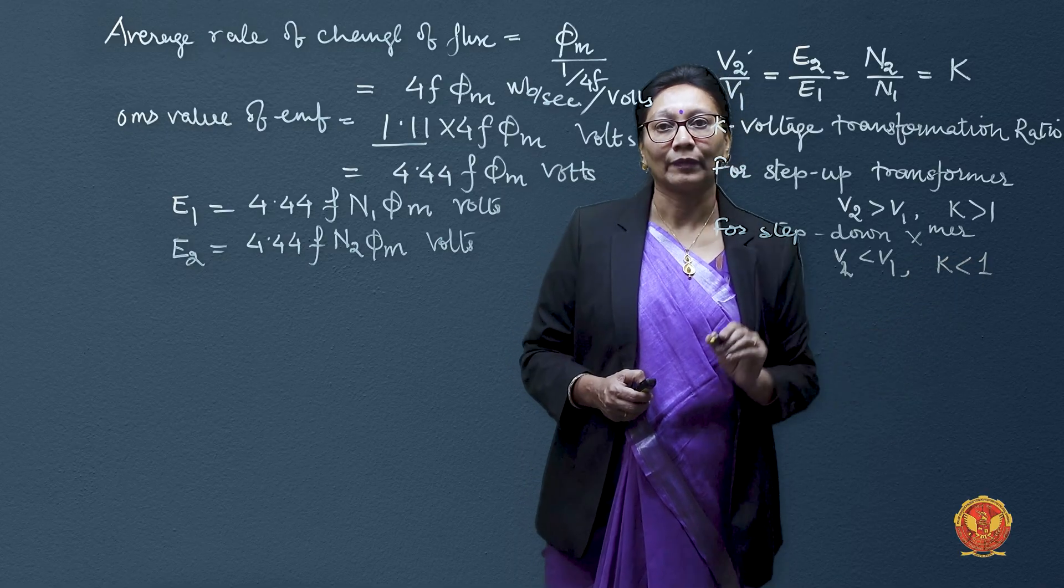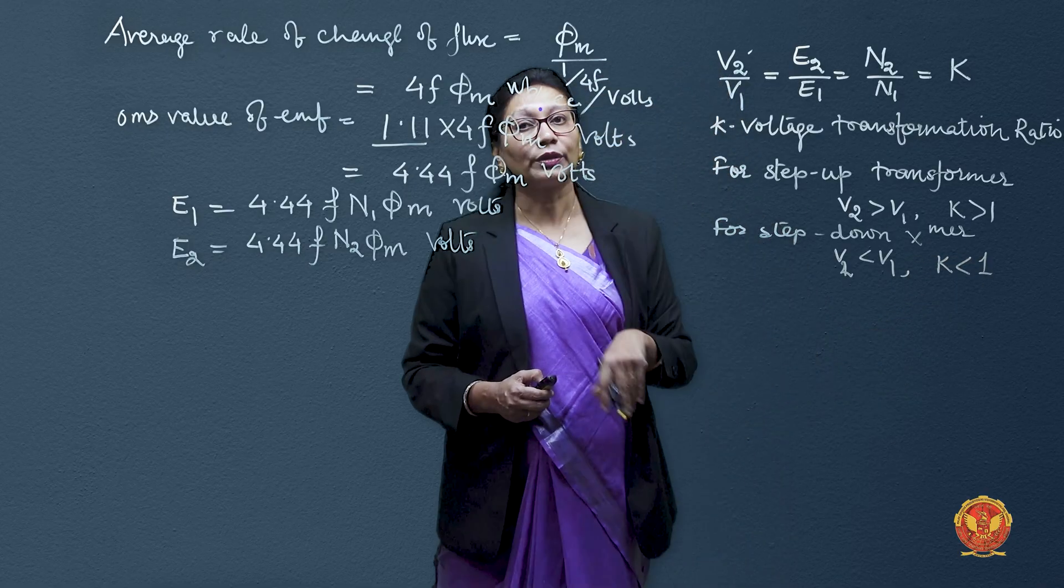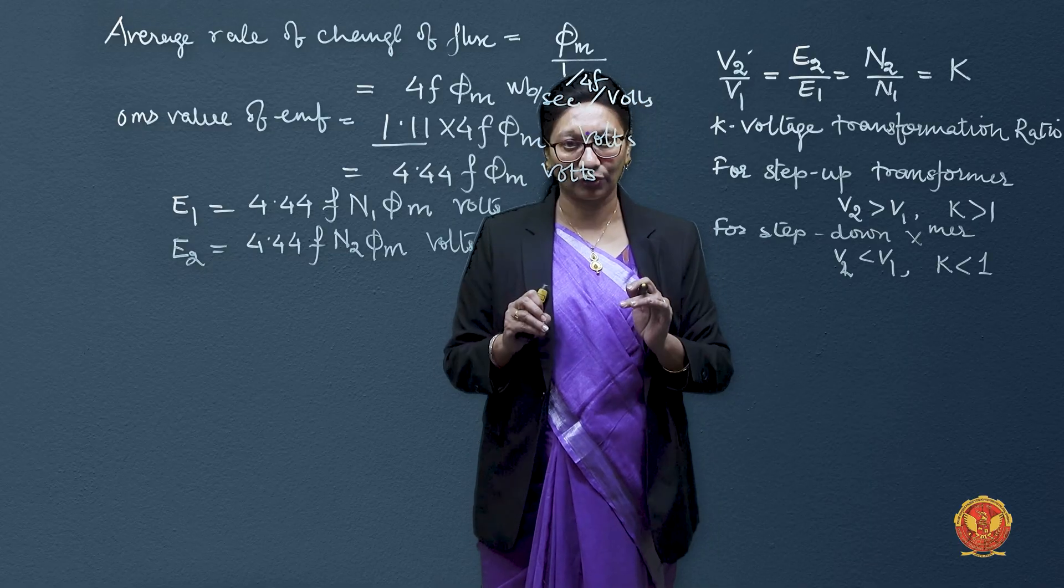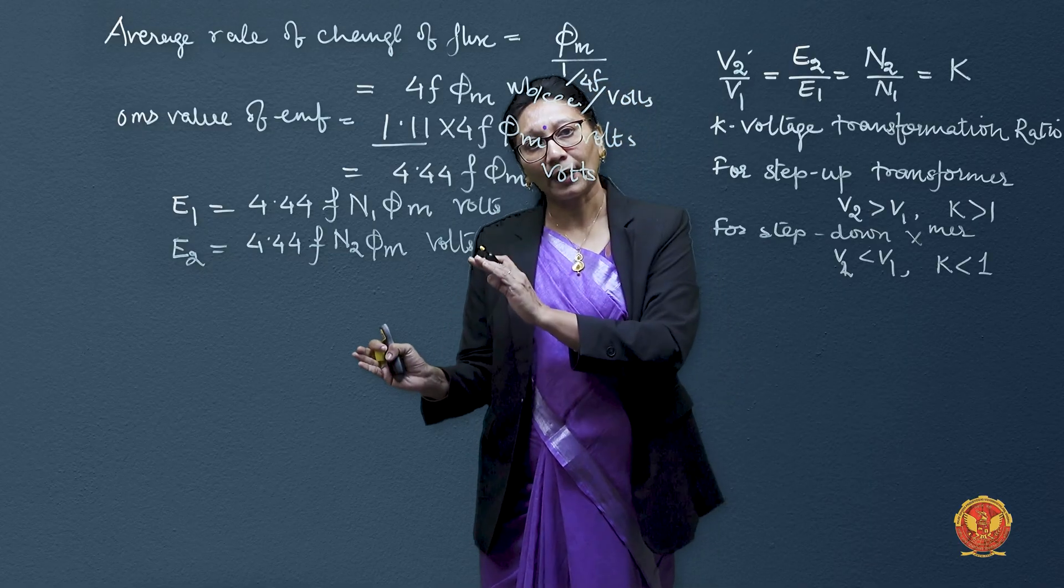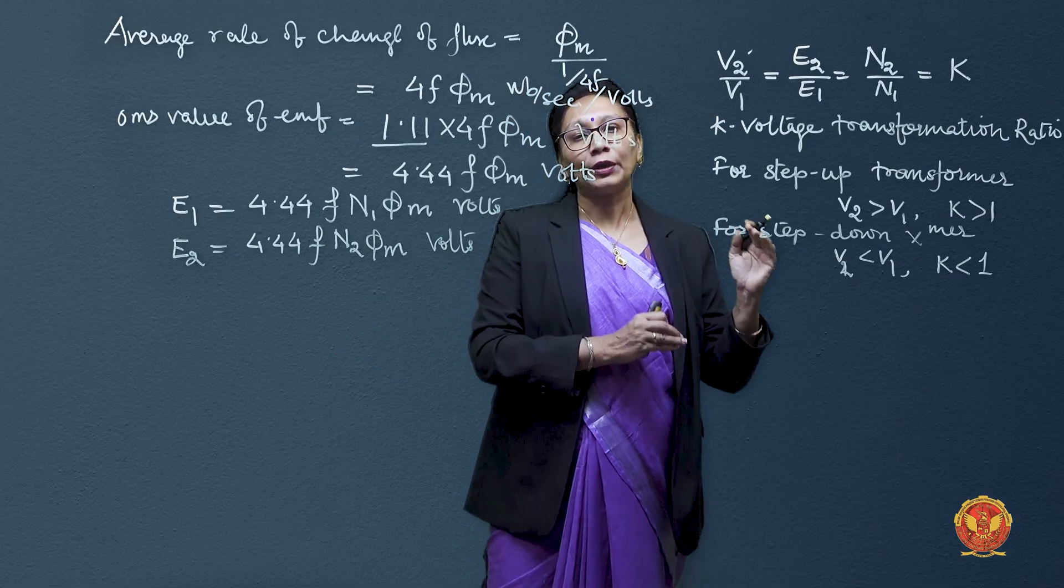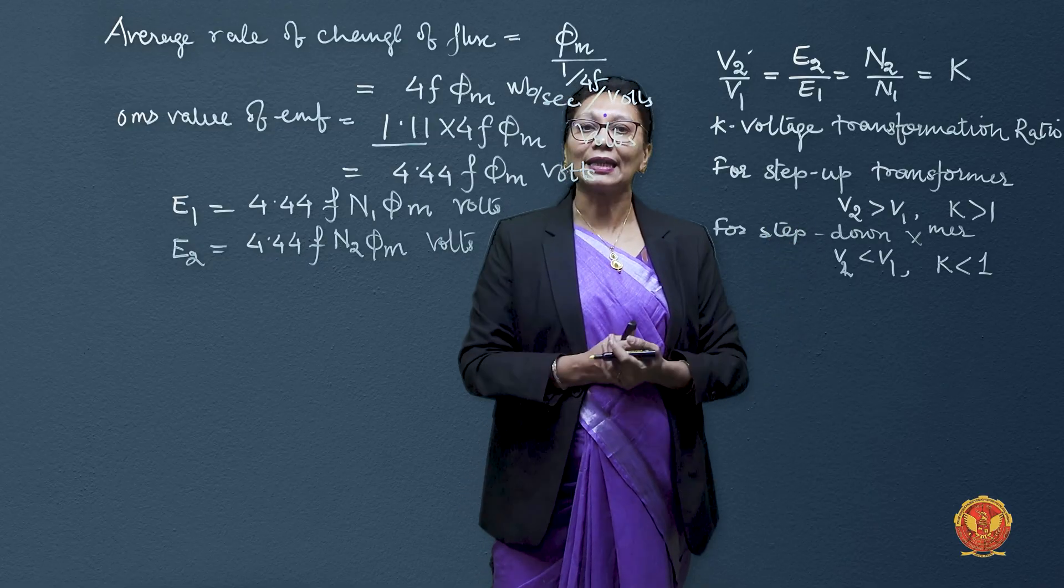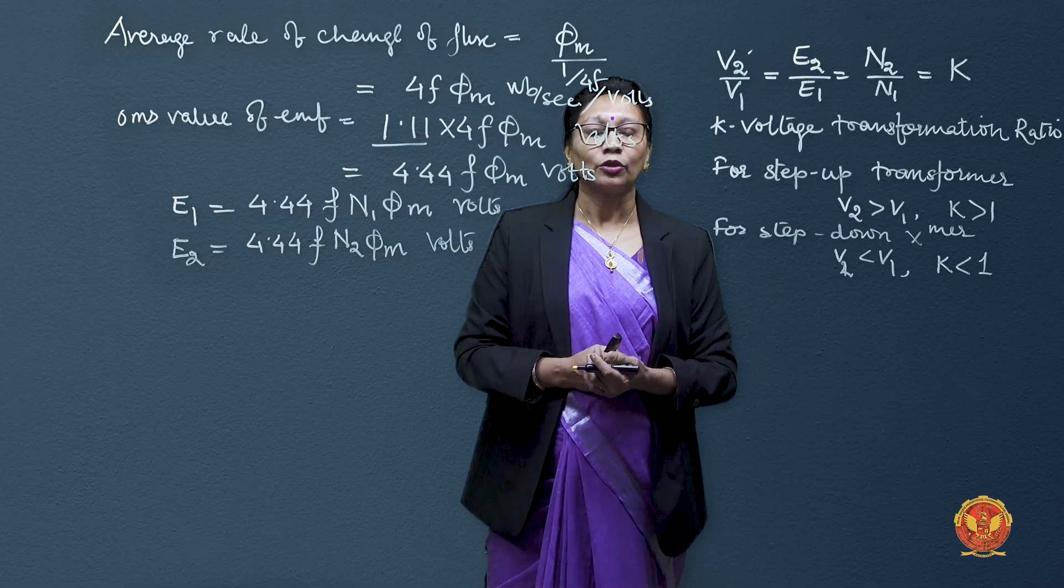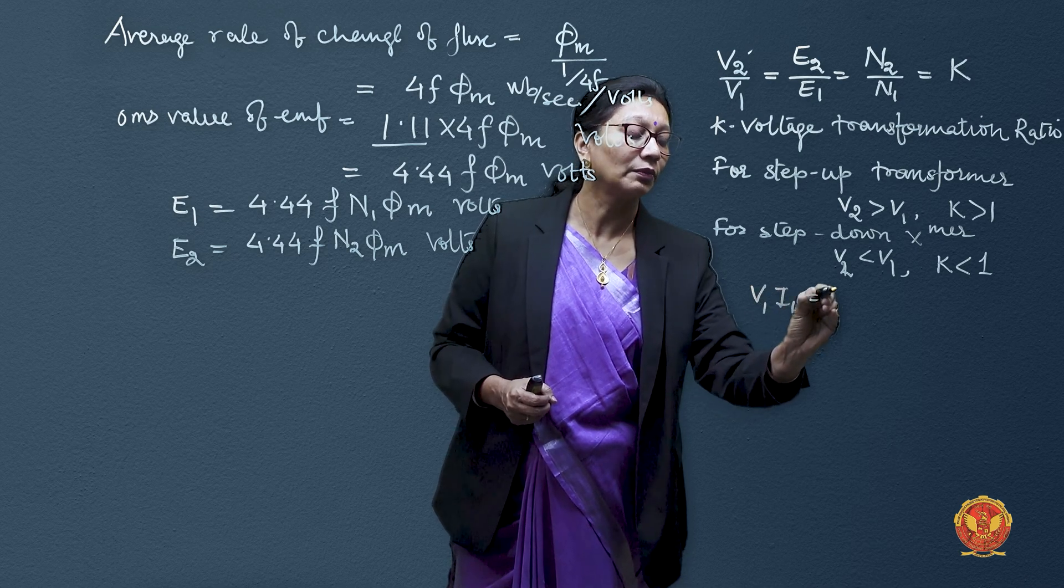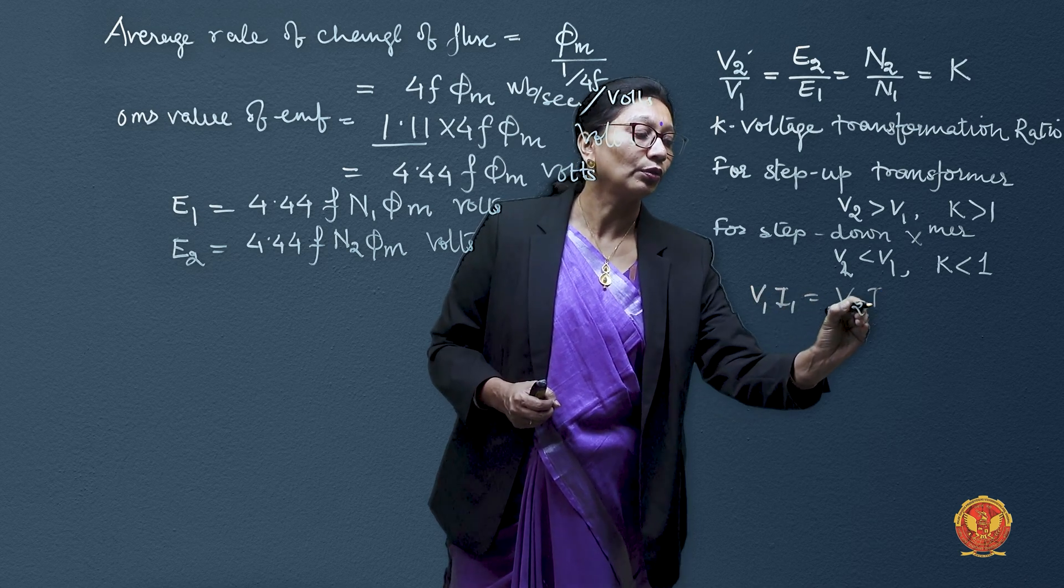And one more thing - in an ideal transformer, losses are negligible. So whatever volt-ampere input is given to the transformer primary should equal the volt-ampere output at the secondary. That means V1 × I1 must equal V2 × I2.